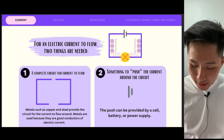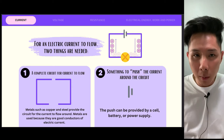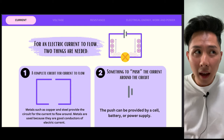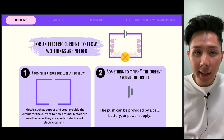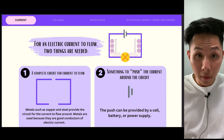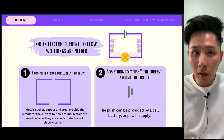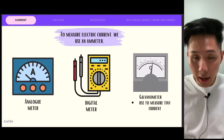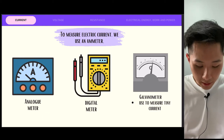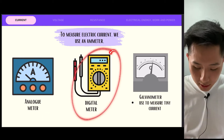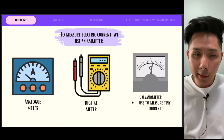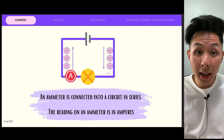And then something to push — that's an informal way of saying it — but something to push the current, which is the electric charges, around the circuit. This push is often provided by a cell, battery, or even a power supply. To measure electric current, we have three different instruments: the analog ammeter, the digital ammeter, and the galvanometer, which is specifically used to measure tiny currents.